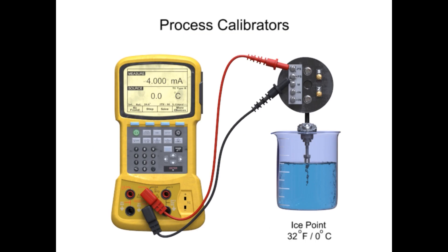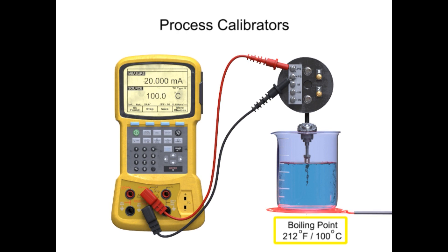To perform the measurement, the process calibrator is programmed to the specific RTD type. The accuracy is determined by measuring the temperature of water at 0 degrees Celsius and 100 degrees Celsius, representing freezing and boiling points of water. Connecting the RTD output to the calibrator, the measured temperature is displayed using the measure function.